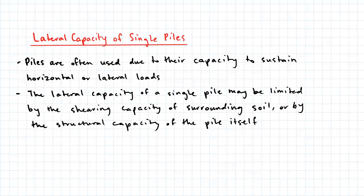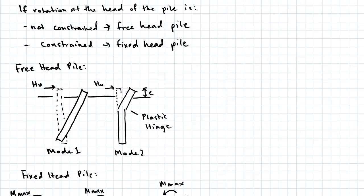The lateral capacity of a single pile may be limited by the shearing capacity of the surrounding soil or by the structural capacity of the pile itself. If the rotation at the head of a pile is not constrained, this is known as a free head pile. If the rotation of the head is constrained by the pile cap, the pile is called a fixed head pile.